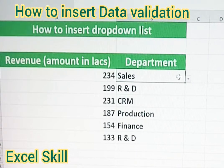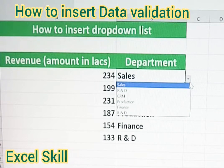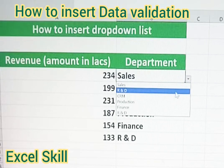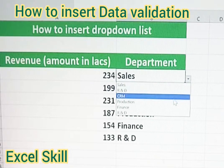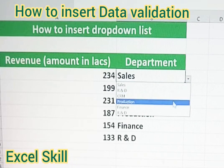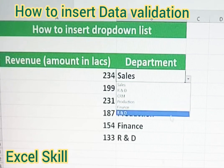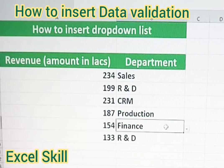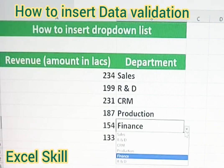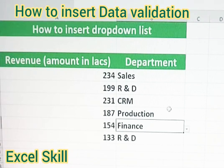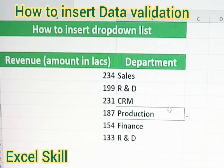Hello all, welcome back to Excel Skills. Today we learn how to insert a drop-down list. Here you can see the list of departments: Sales, R&D, CRM, Production, and so on. Only the items in the defined list are populated, and if you enter anything else it will not allow it. Let us learn how to do this.